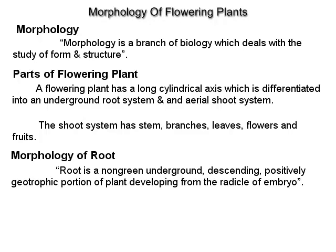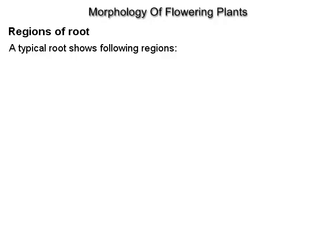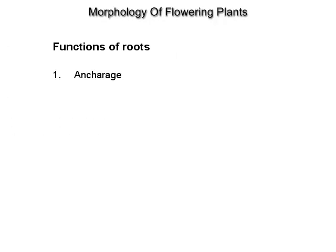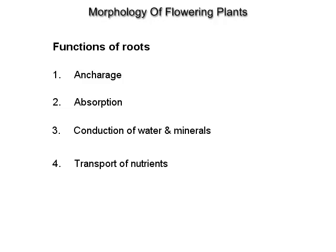Morphology of a root. Root is a non-green, underground, descending, positively geotrophic portion of a plant developing from the radical of the embryo. A typical root shows the following regions: root cap, meristematic zone, zone of elongation, root hair zone and maturation zone. Functions of roots: anchorage, absorption, conduction of water and minerals, and transport of nutrients.